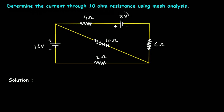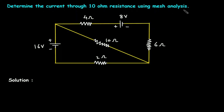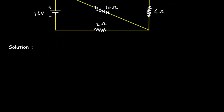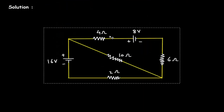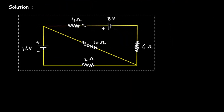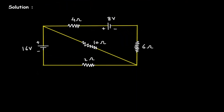Determine the current through the 10 ohm resistance using mesh analysis. Let's assume this is mesh number 1 with current I1, and this is mesh number 2 with current I2.